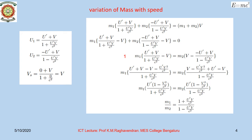After a few simplification steps, we combine all terms of M1 and M2 together and equate the right-hand side to 0, then separate the M1 and M2 terms on either side of the equation, obtaining Equation 1. Further simplification leads to the final result: M1/M2 = (1 + U'V/C²) / (1 − U'V/C²), shown as Equation 4.